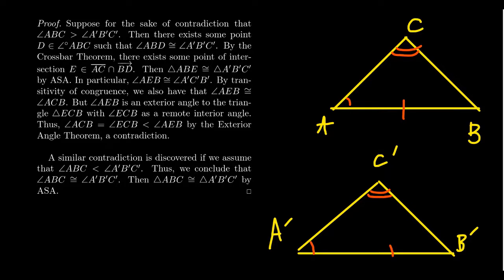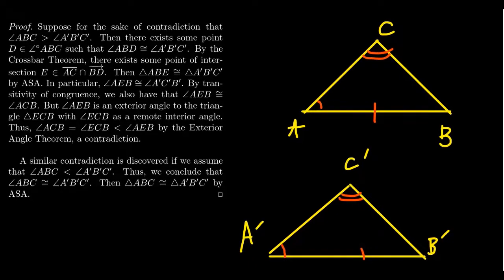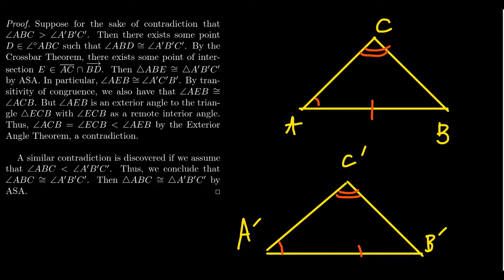In the Euclidean sense, if we could prove the other angles are congruent we could use angle-side-angle and be done — and that's roughly how we'll approach this. We want to show that angle B is congruent to angle B'. We'll accomplish that by supposing they are not congruent and deriving a contradiction. So suppose angle ABC is not congruent to angle A'B'C'. One angle must be larger, and without loss of generality we can assume angle ABC is larger than angle A'B'C'.